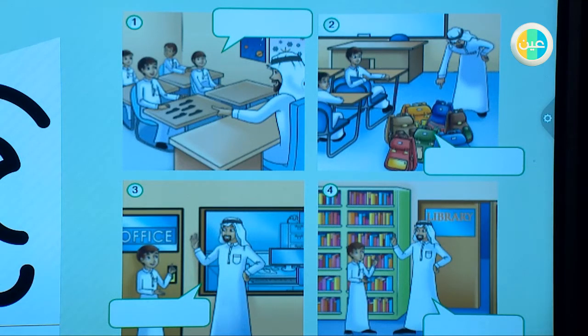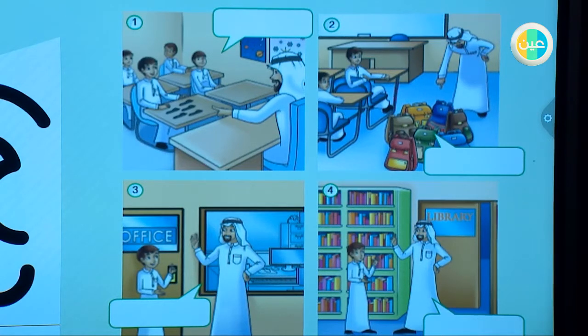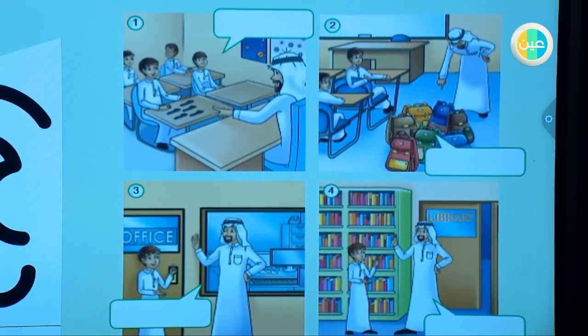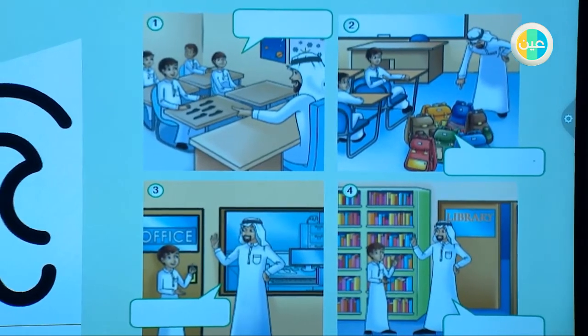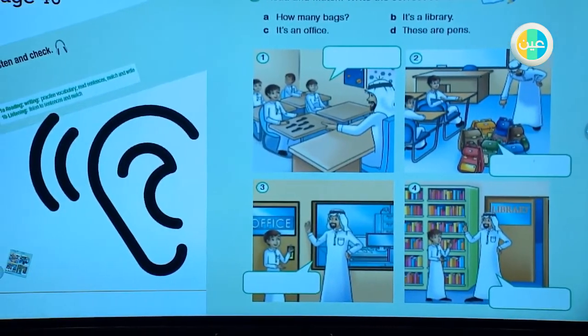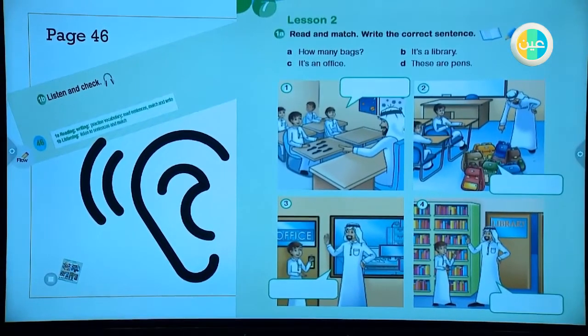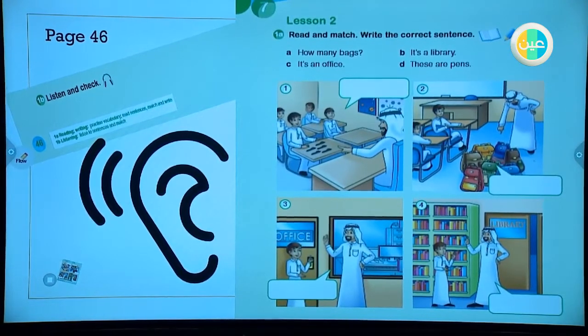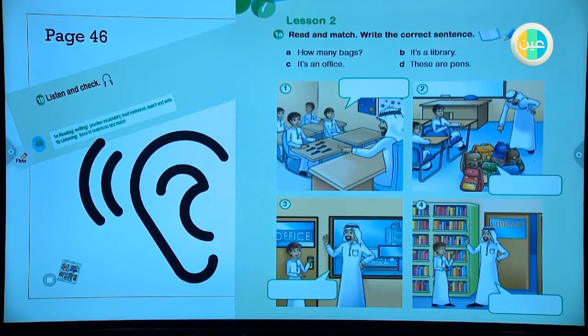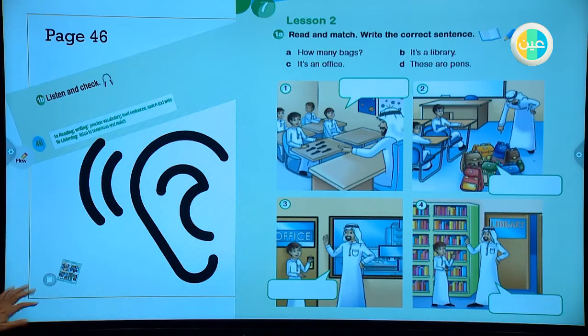Unit seven, lesson two, activity one B. Listen and check. One D: These are pens. Two A: How many bags? Six. Three C: It's an office. Four B: It's a library. Do you check your answer? Good job, let's check it together.